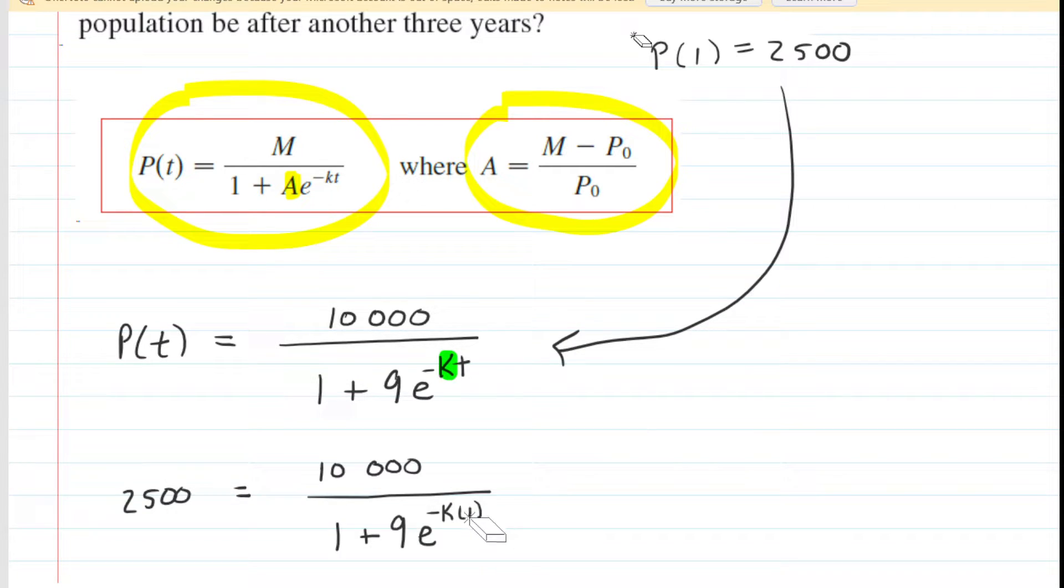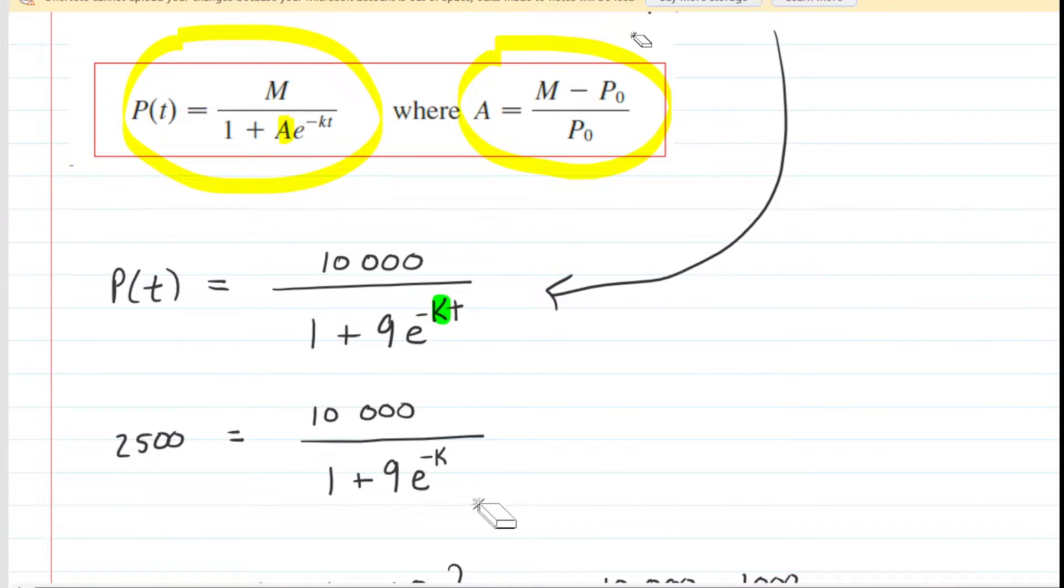Now in the exponent, we have negative K times 1, so that's just negative K, so we can simplify that a little bit. Now we have enough data plugged in to solve for the value of K. So the question is, how do we do that?